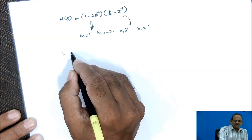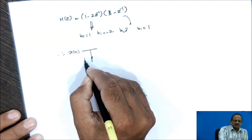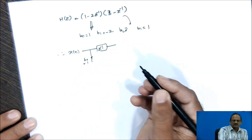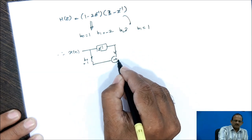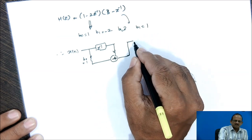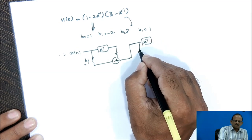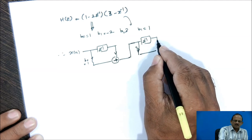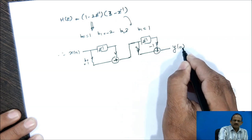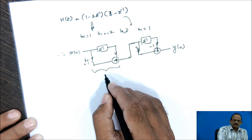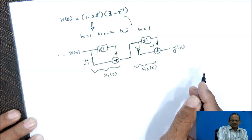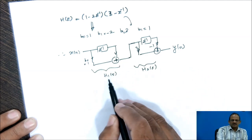Considering X of n as input with B0 equal to 1, the delay element gives X of n minus 1. Adding these two gives the first system. This output is given as input to the second system, where the coefficients are 3 and minus 1. Adding together gives Y of n at the output. This is H1(z) and H2(z). We have connected these two systems in cascade, and the order can be interchanged to give an equivalent system.